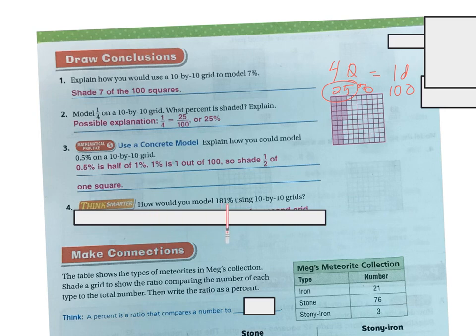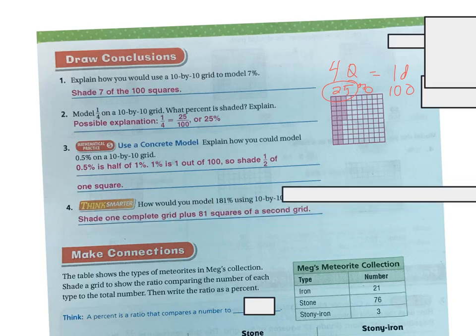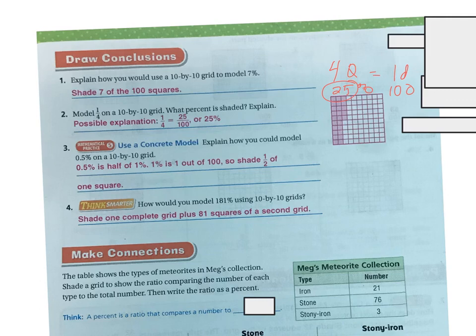Think smarter. How would you model 181% using a 10 by 10 grid? Kind of tricky, but I would shade one complete grid plus 81 squares of a second grid, right? Because it's 181%. So you actually need 200 to make that happen.